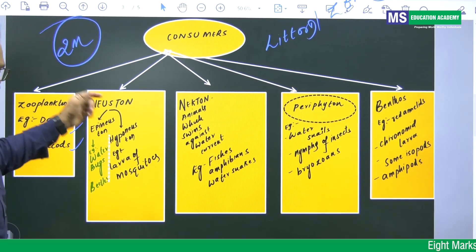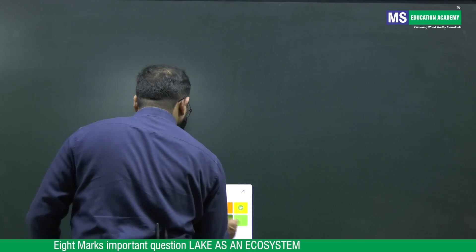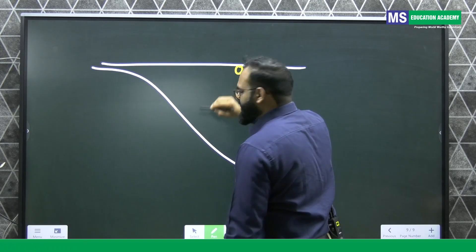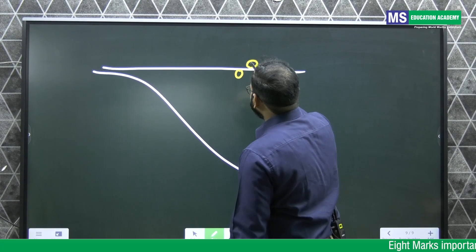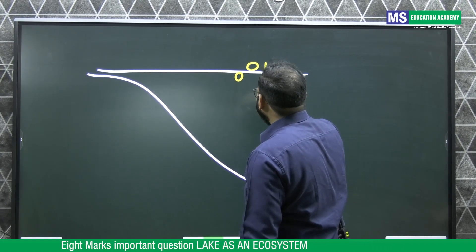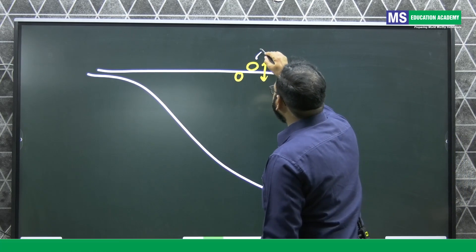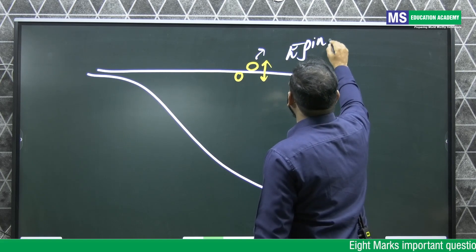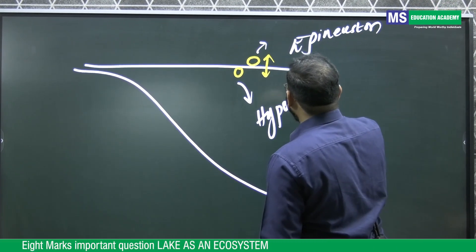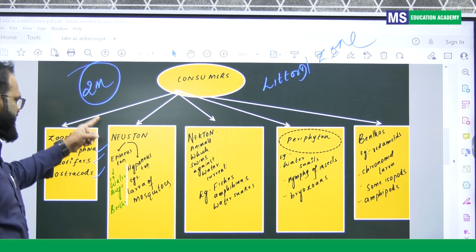Now coming to these Neuston students. Neustons are animals which lives in air-water interface. So you know this is surface tension area. Right. These two areas are there. Above the water surface, below the water surface. So animals which live in this air-water interface area are called Neuston. Animals which lives above the water surface are called Epineuston. And animals which lives below the water surface are called Hyponeuston.